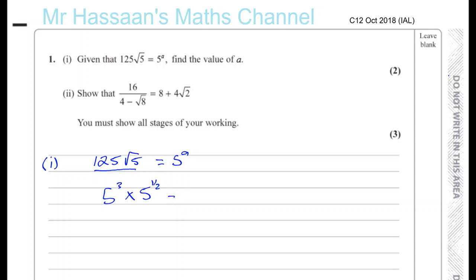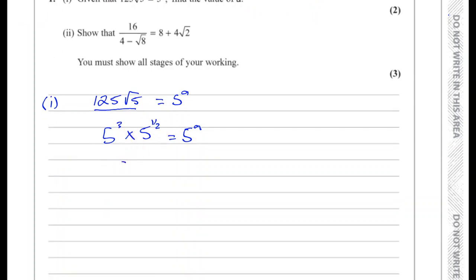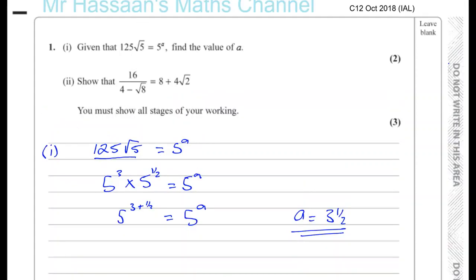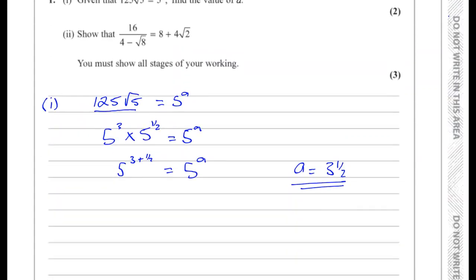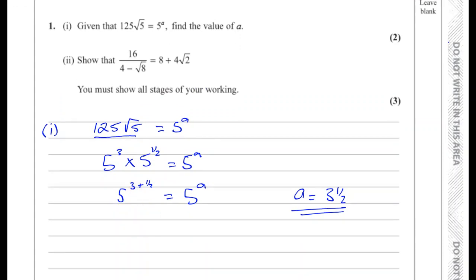That's equal to five to the power of A. So five cubed times five to the power of a half. Remember we have to add the powers. So it's five to the power of three plus a half, equals five to the power of A. So we can say a is equal to three and a half. Three and a half, three point five, seven over two, as you wish. So that's the value of a. Just rewrite it so they both have the same base. Then the powers must be the same.